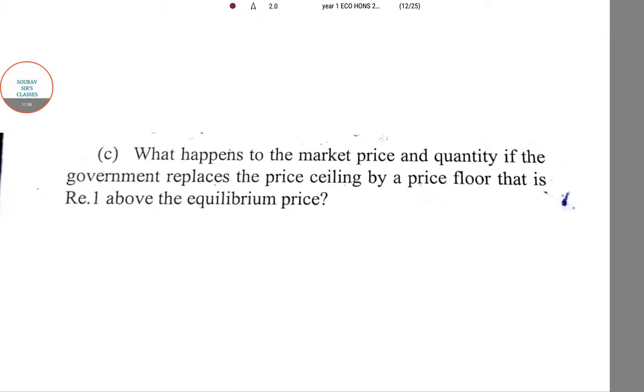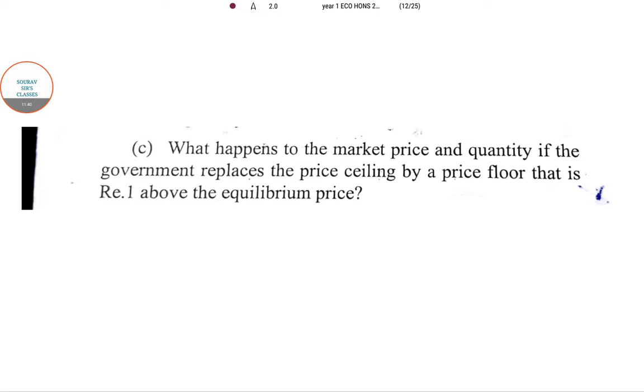What happens to the market price and quantity if the government replaces the price ceiling with a price floor that is one unit above? I'm keeping it as homework. Remember P = 6, so if you put P = 7, obviously quantity demanded will be less than quantity supplied. There will be a problem in the market.